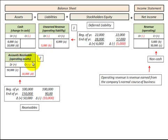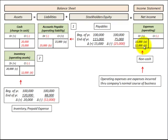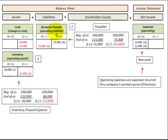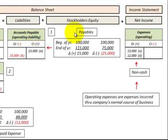Now let's look at expenses recognized in net income, which can be derived from a liabilities account or an asset account. Starting with the liability side — accounts payable — this is where we receive a product or service before we pay for it. If the beginning-of-year balance was $100,000 and end-of-year was $115,000, it increased by $15,000. We'd increase accounts payable by $15,000 and recognize a $15,000 non-cash expense.